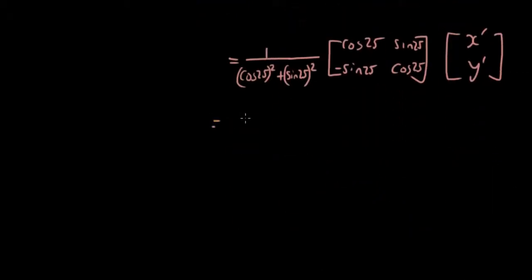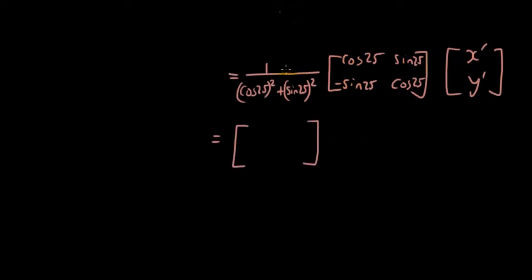Okay, so it's probably easier if you just type all this into the calculator and then come back. So if you type the constant on the outside of the matrix, you'll get 1, so it's 1 times cos 25, sin 25, negative sin 25, cos 25 times x' y'.